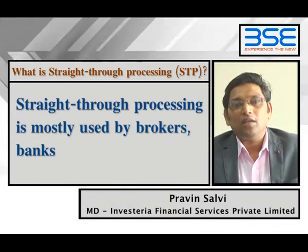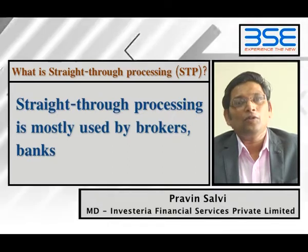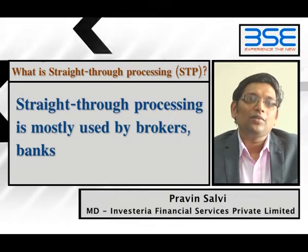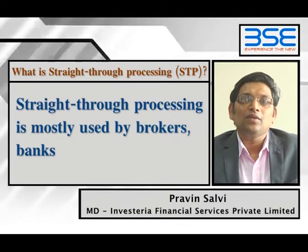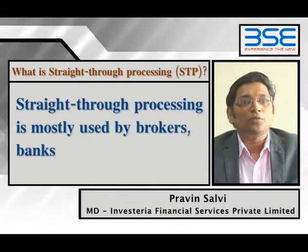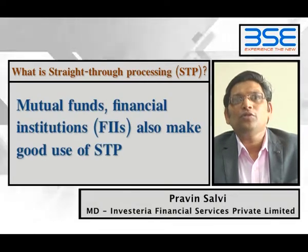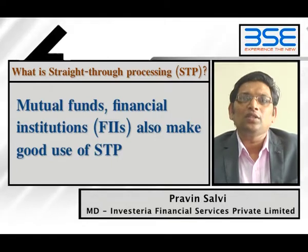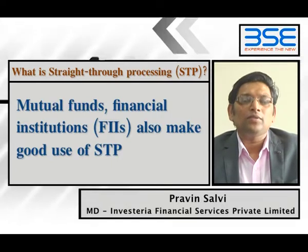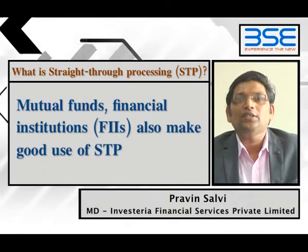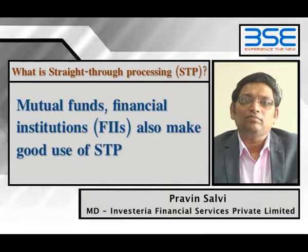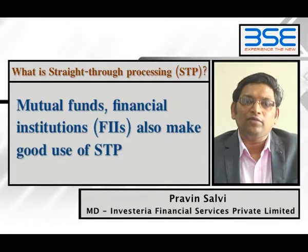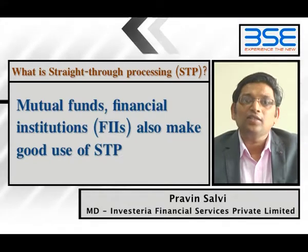That is more oriented to the end user. Today, we are speaking about the STP system — Straight-Through Processing — which is mostly used by market intermediaries like brokers, banks, clearing members, clearing houses, mutual funds, and other financial institutes like FIIs.